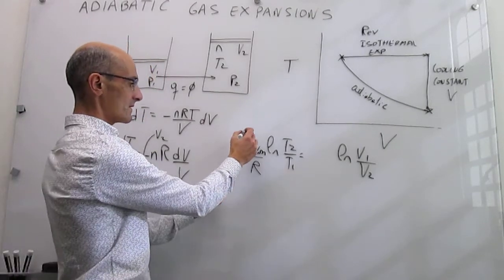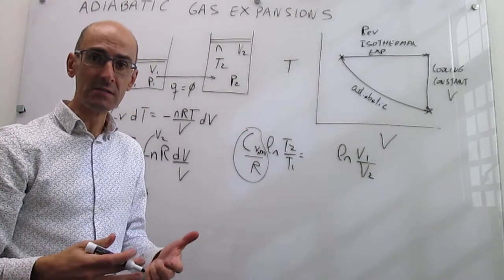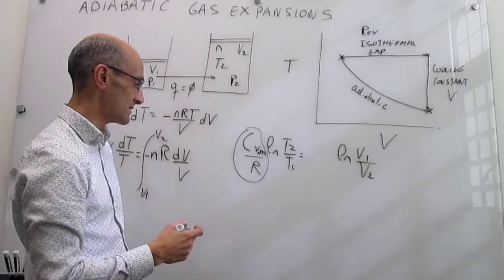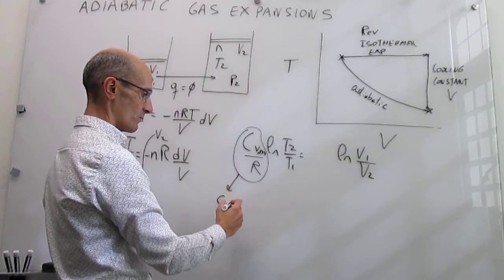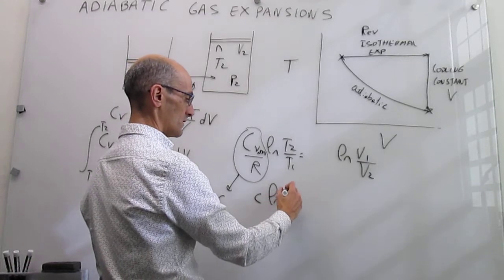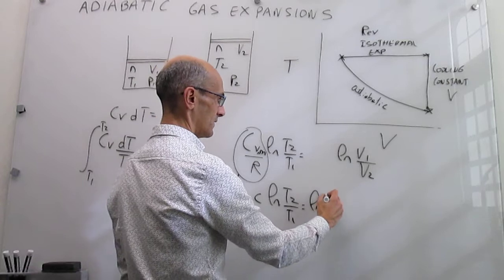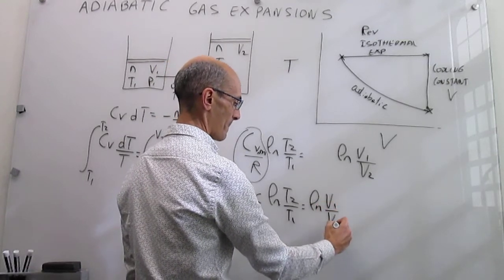Now, this constant you have right here, that's a constant, and we can just define it as a new constant, maybe we're going to call it c. So when you do that, that expression is going to be c natural log of T2 over T1 is equal to the natural log of V1 over V2.